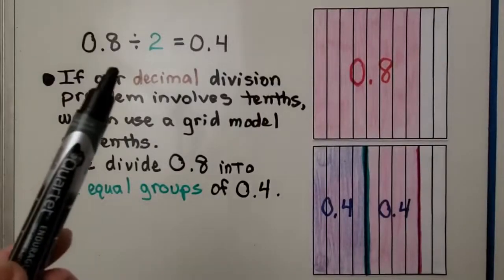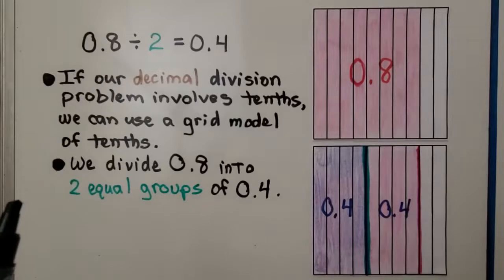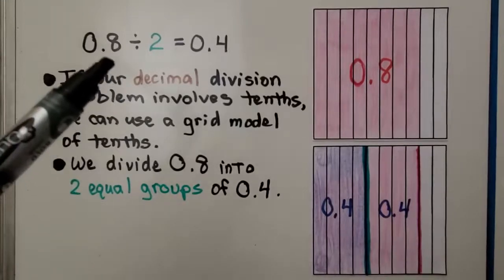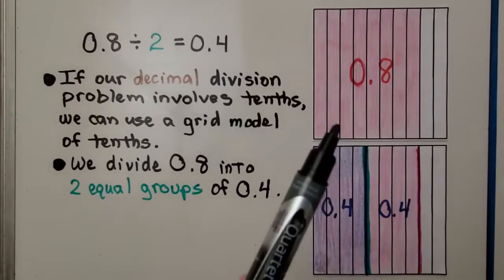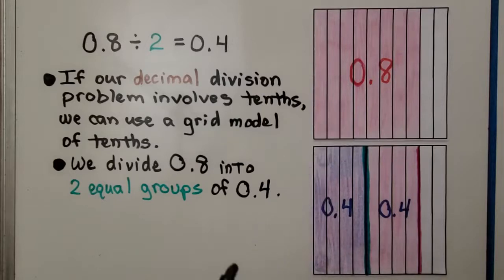Here we have 8 tenths divided by 2. If our decimal division problem involves tenths, we can use a grid model of tenths. We divide 8 tenths into two equal groups. That's the number of groups. We have 4 tenths in each group. It's equal to 4 tenths.